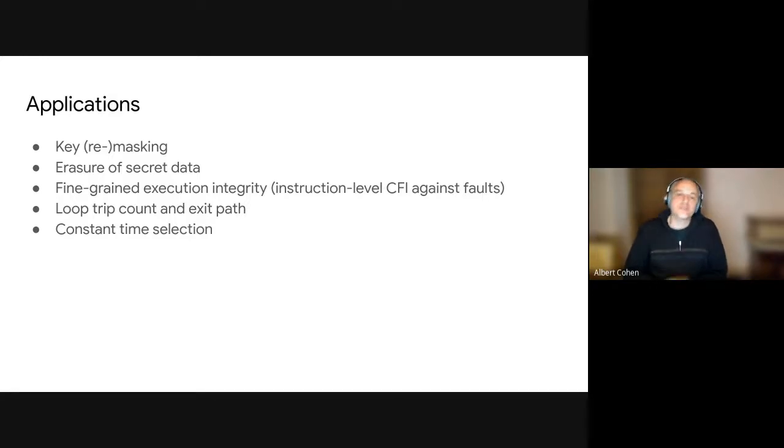Control flow integrity and more specifically a few problems related with fine-grained instruction level integrity and also loop trip count integrity. So checking that you have the right number of iterations before exiting the loop. These are the kinds of problems that we can protect using these approaches and also constant time selection, which is well known to suffer from downstream optimizations that may replace carefully crafted constant time expressions into branches because some compiler backends know that in some specific microarchitecture features, it's actually faster to have a branch than a conditional move. For example, these are things we can avoid using this opaque observation approach.